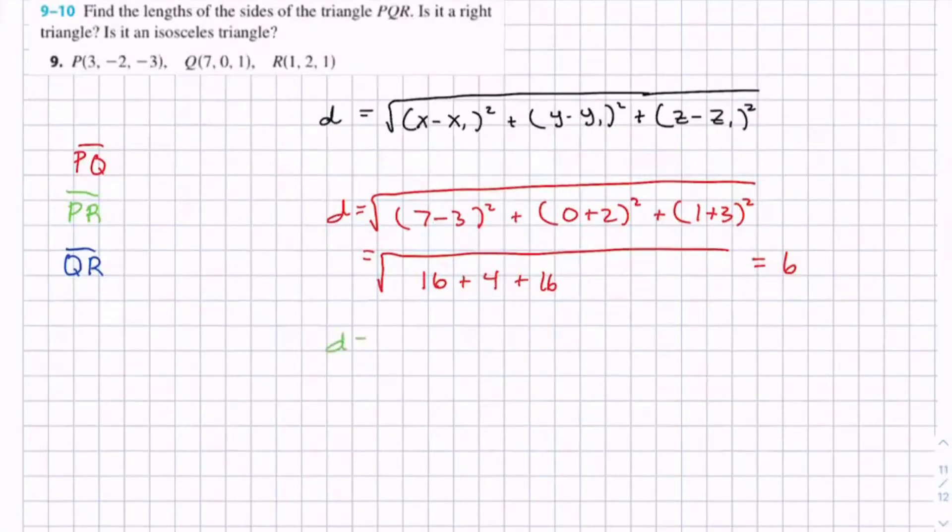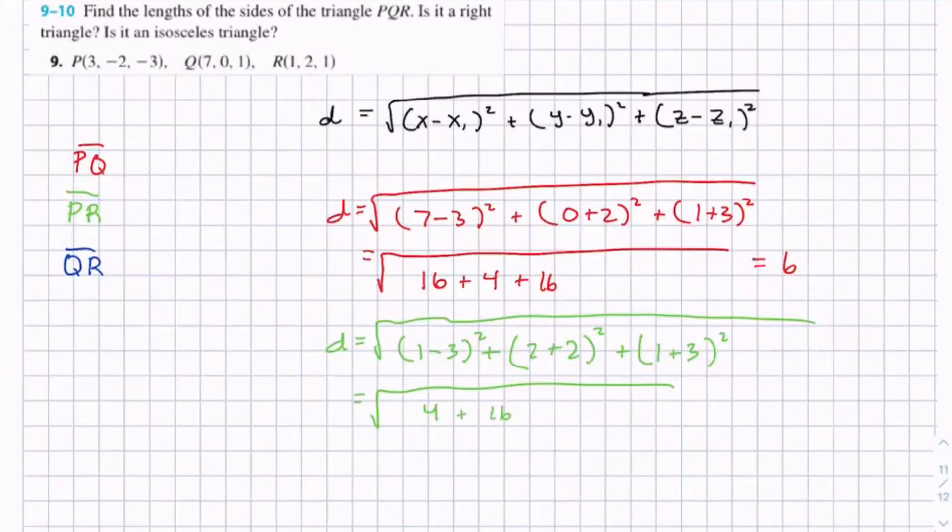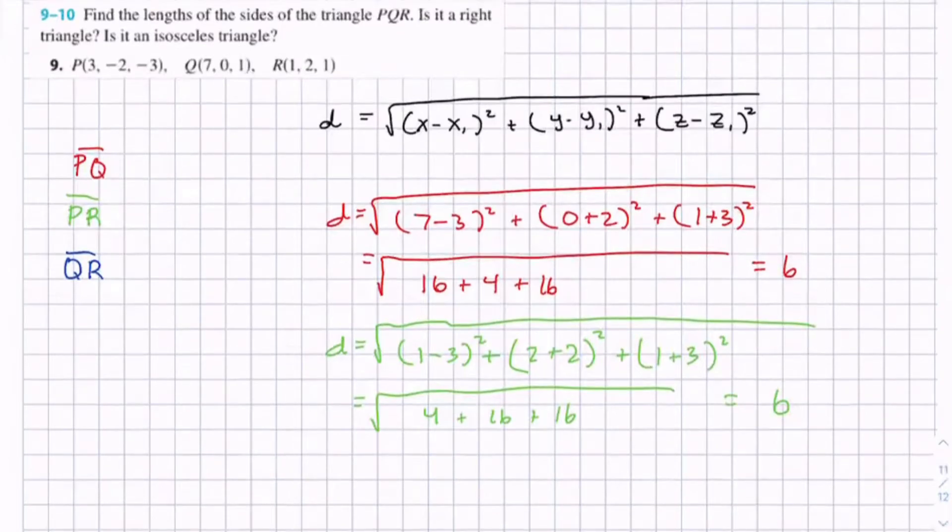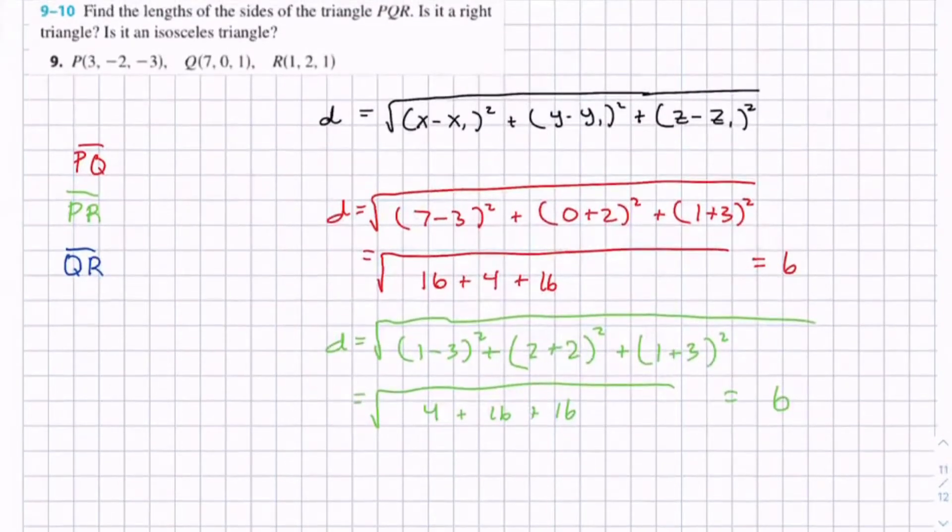For PR, the distance equals (1 - 3)² plus (2 - (-2))² plus (1 - (-3))². This is (-2)² which is 4, plus 4² which is 16, plus 4² which is 16, which equals the square root of 36, which is 6. So we know two sides are 6, but this doesn't yet determine if it's isosceles or a right triangle.